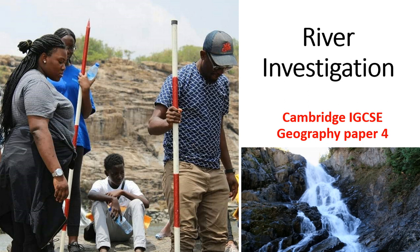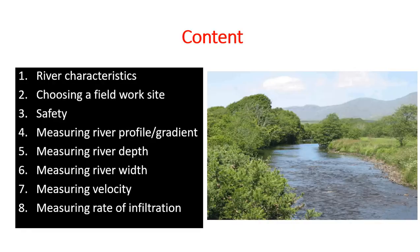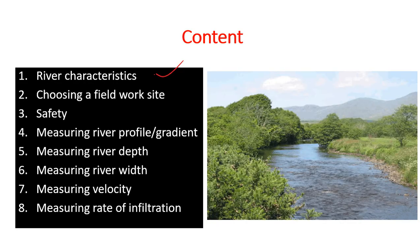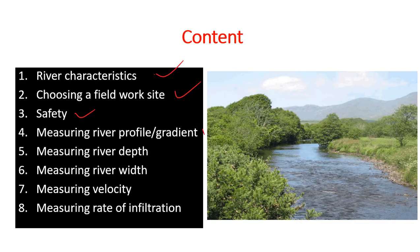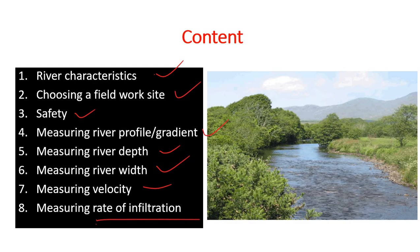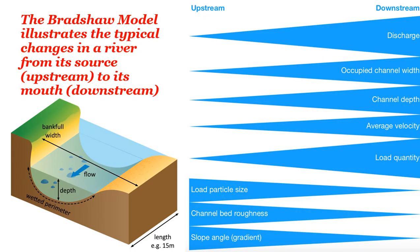Welcome to this aspect of IGCSE Geography Paper 4, where we'll be looking at how to carry out a river investigation. The content we'll be covering in this lesson includes river characteristics, choosing a fieldwork site, safety precautions, and measuring river gradient, depth, width, velocity, and rate of infiltration.